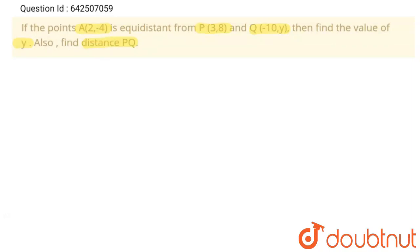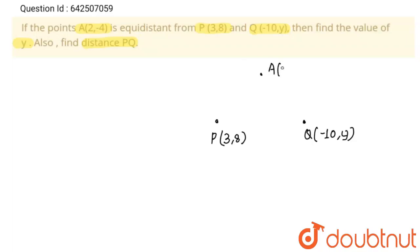Let's solve this. I am going to take two points. The first point is P whose coordinates are (3, 8), and the second is Q whose coordinates are (-10, y). Now, as the distance of A from both points is the same, A is at coordinate (2, -4). According to the question, AP equals AQ.